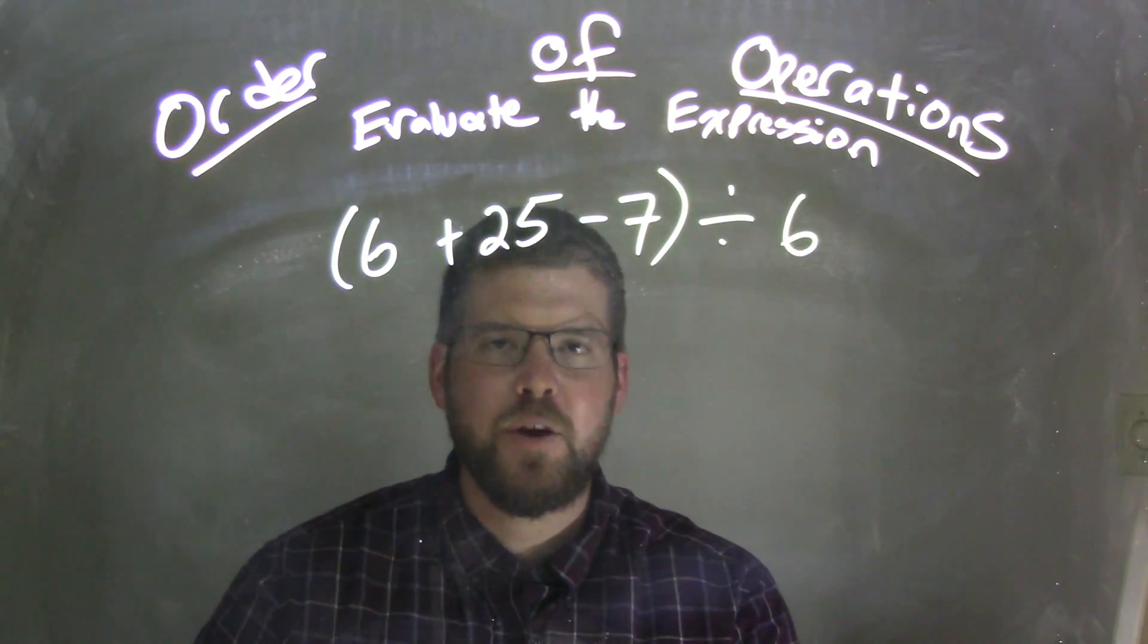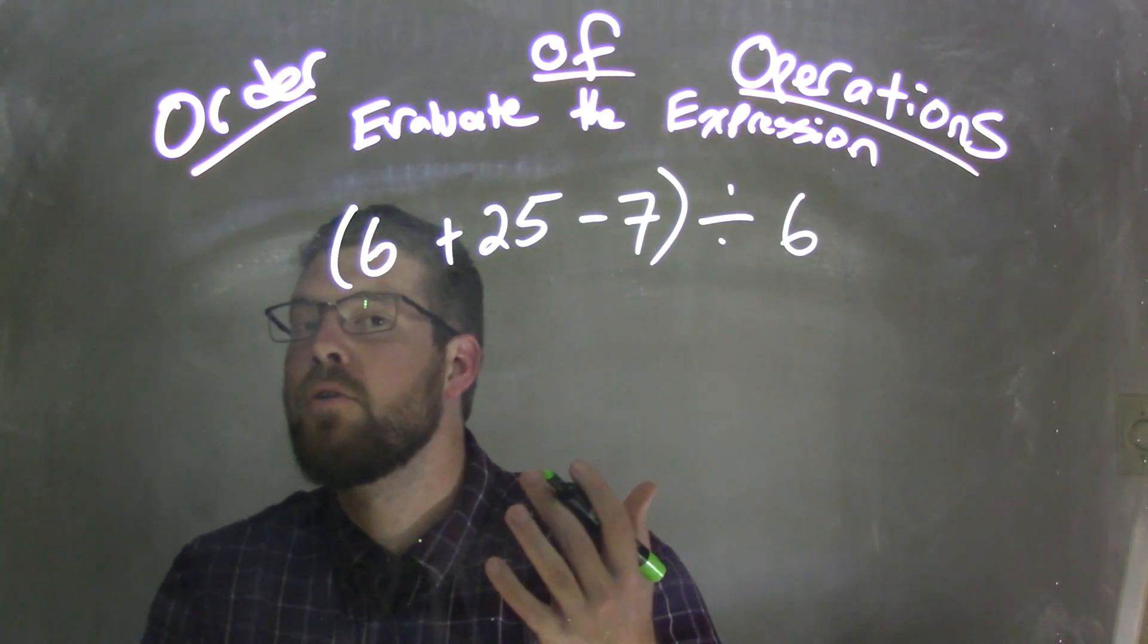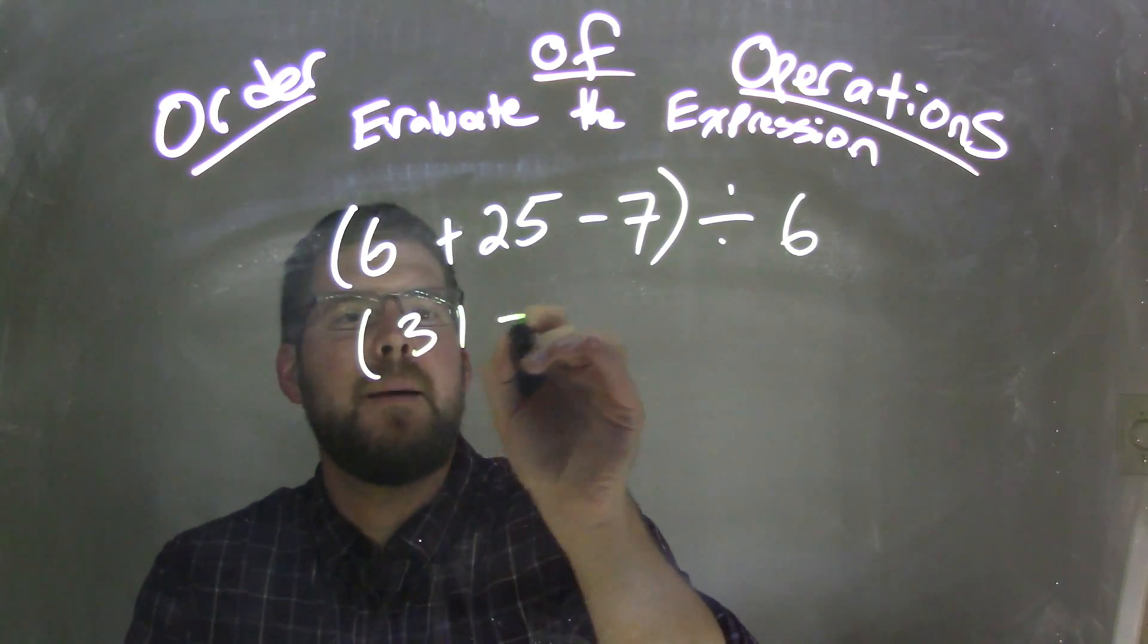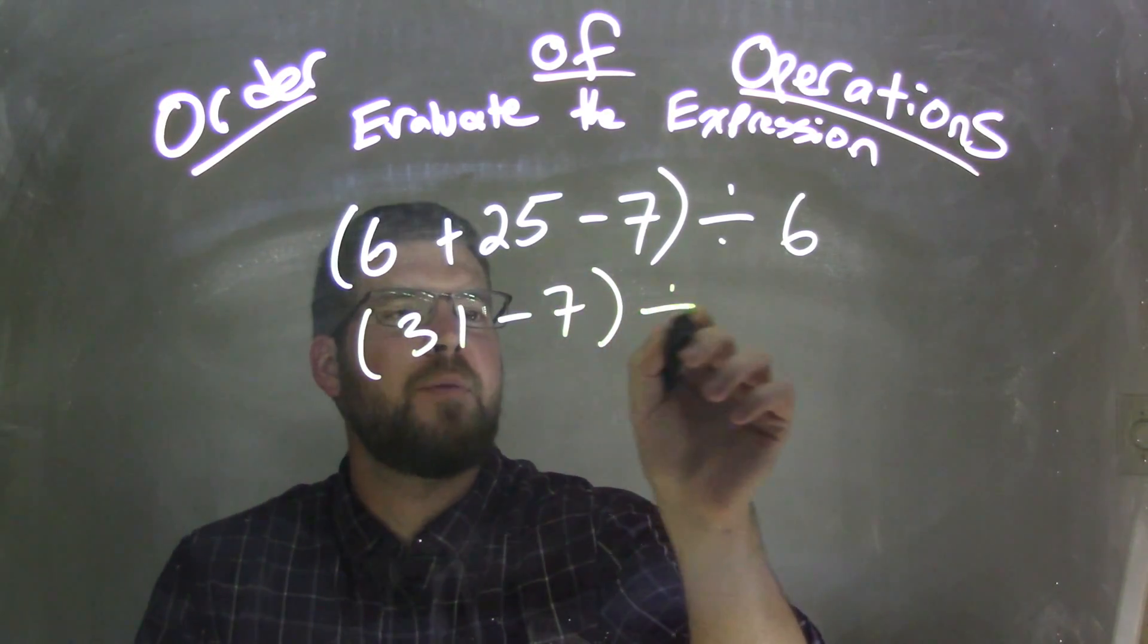6 plus 25 comes out to be what? 31. 31 minus 7 divided by 6.